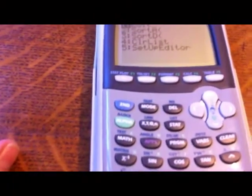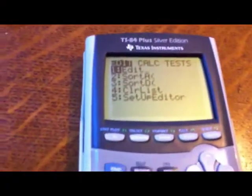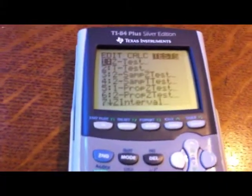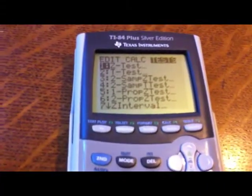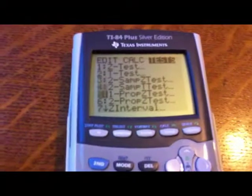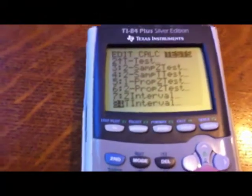So what we need to do, we have already entered our data. We are going to, again, use the STAT command. So we have STAT, but now we need to page over to tests. So use your arrow to page over, and we then need to go down. So use your down arrow, and keep going all the way down until you get to eight.